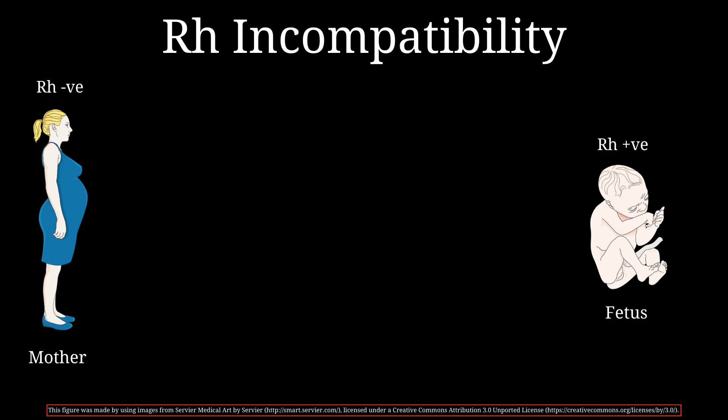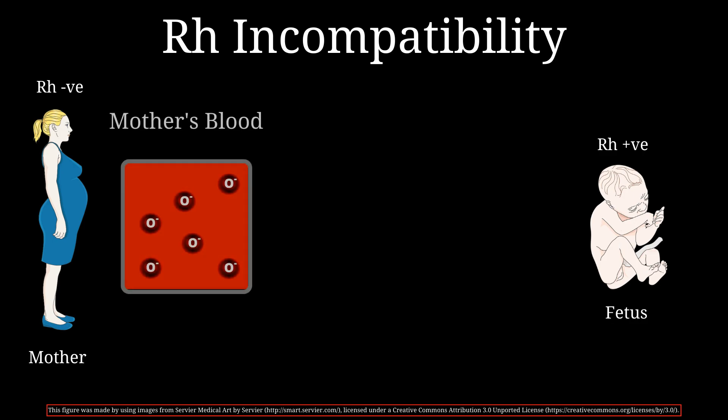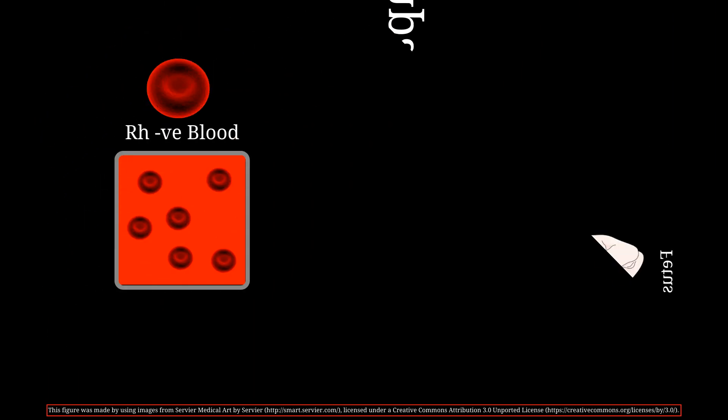Let's say we have a pregnant mother with RH negative blood on the left and her fetus with RH positive blood on the right. This means that RH antigens are not present on the surface of the mother's red blood cells. Individuals with RH negative blood do not have antibodies to RH antigens present in the serum by birth.